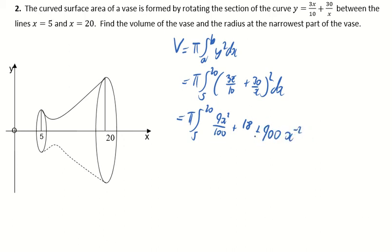So just got that in index form. So that last term, that was my 30 over x times my 30 over x, which would be 900 over x squared, which is 900 x to the minus 2 in index form. So we do this out, we've still got pi,